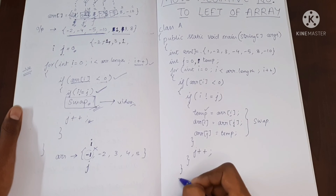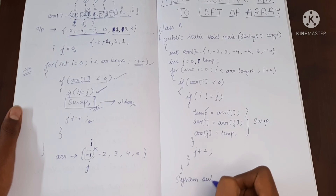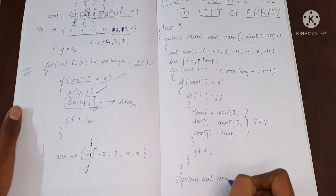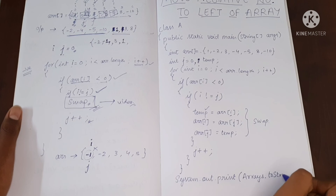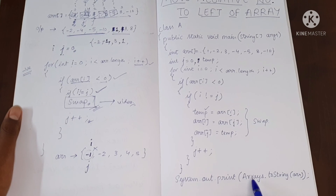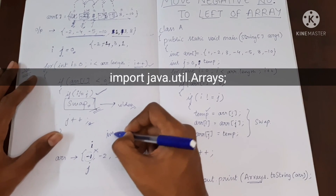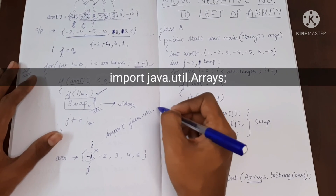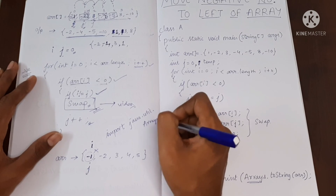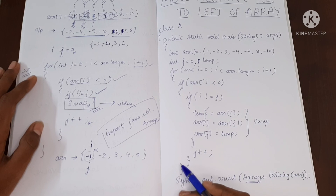Now let's print the array. I have a video showing how to print an array without a for loop — we'll use Arrays.toString and send the array as input. For Arrays to work, we have to import java.util.Arrays. If you've learned something from this video, please leave a like and consider subscribing to my channel. Thank you.